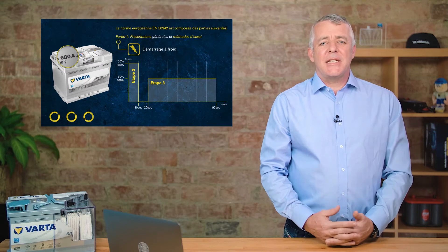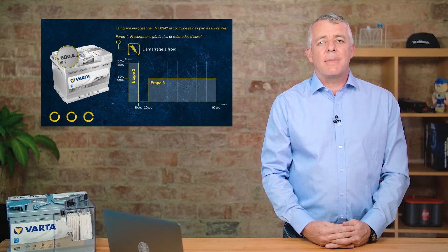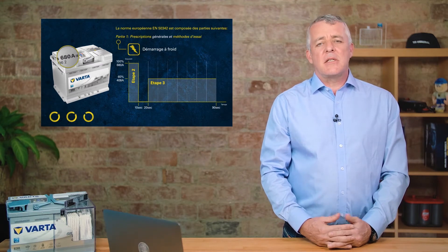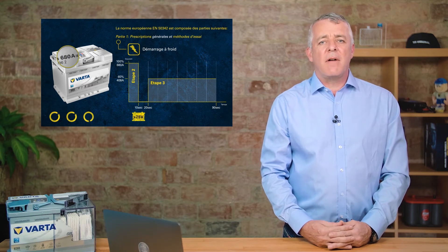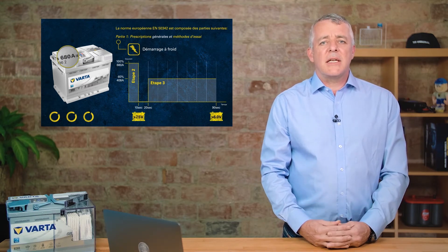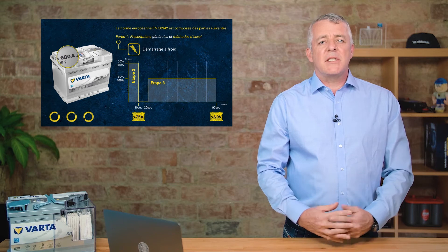The battery only passes the test once two criteria have been met. After the first 10 seconds, the voltage must be above 7.5 volts, and after the 90 second test, the voltage must be above 6 volts.